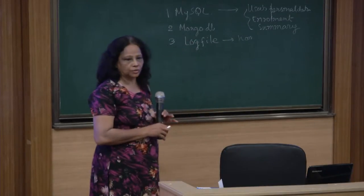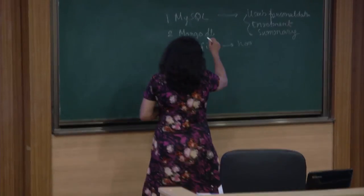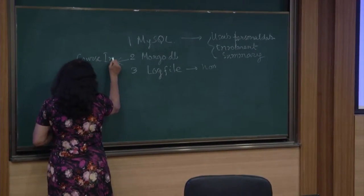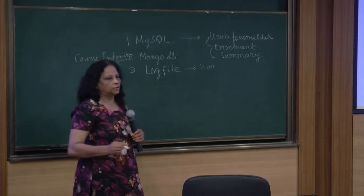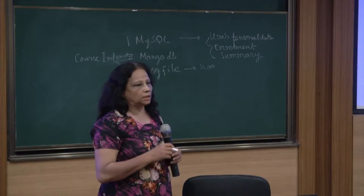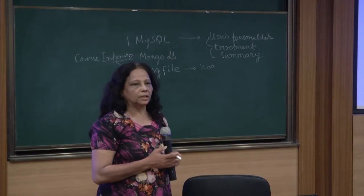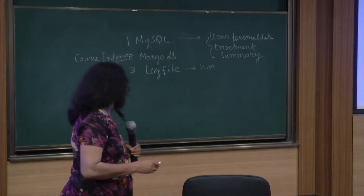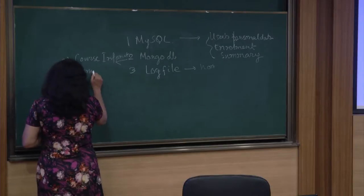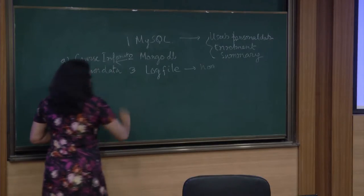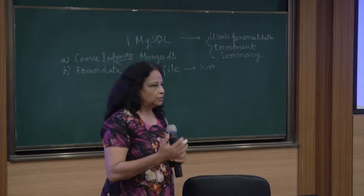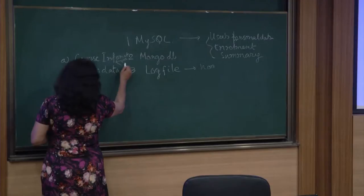We will also have the grade information for the students. So these are basically the MySQL data. MongoDB will have the course information — that is, which courses are offered by IIT Bombay, what is the course structure, what are the course chapters or sessions, what are the videos covered, what are the problems, quizzes — all those information are kept there. The second information is the forum data. Whenever there is a discussion topic, the forum will be started and the page will be created. All those data are kept in the forum data. So these two kinds of information are kept in MongoDB.